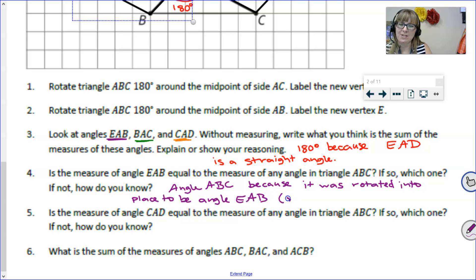So angle ABC because it was rotated into place to be angle EAB. Remember, that's a rigid transformation. A rotation is a rigid transformation, so of course the angle is staying the same.